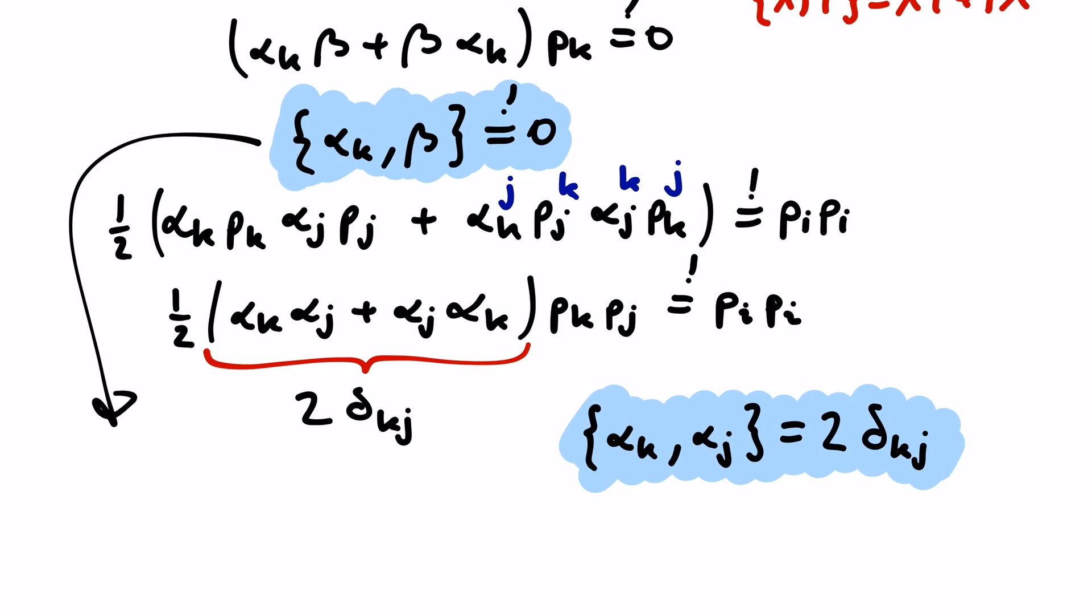It's worth noticing that the condition that an anticommutator has to vanish is kind of strange, because usually it doesn't matter if we write x and y or y times x. Normally it just gives two xy. And if this has to vanish, either the one or the other variable inside the anticommutator has to vanish.